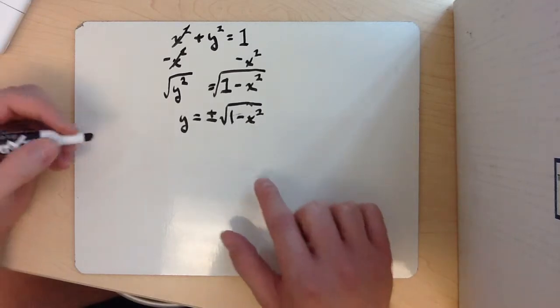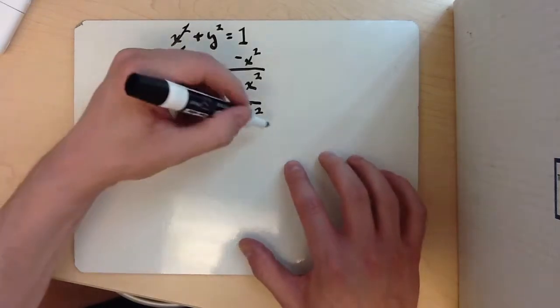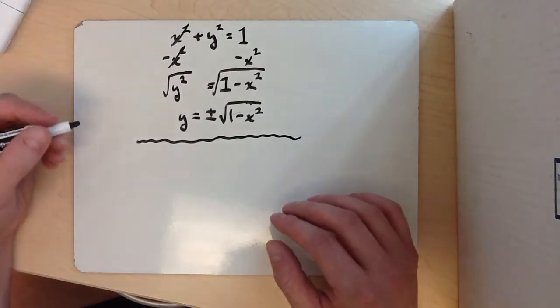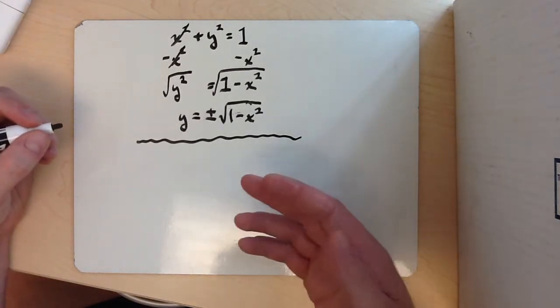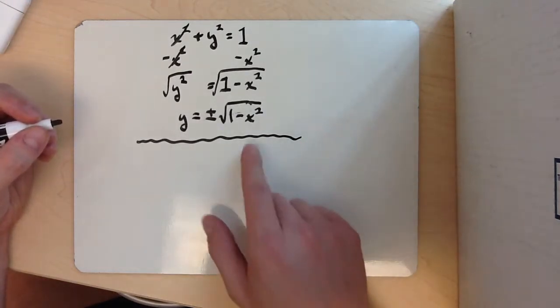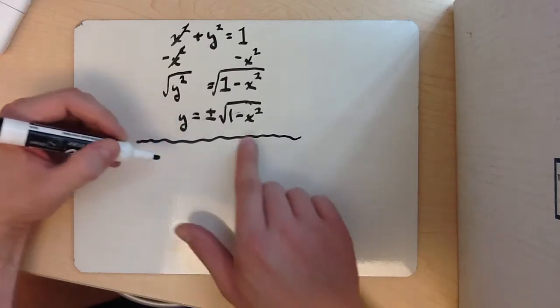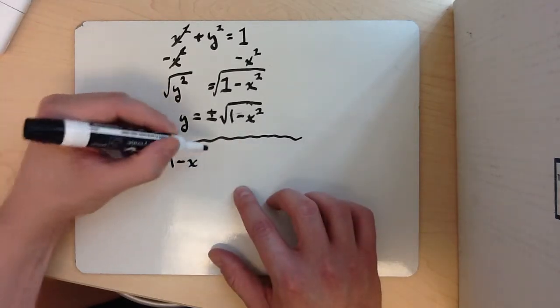So what we're going to do is this 1 minus x squared has to be - it can be equal to 0 or it can be greater than 0, but it can't be less than 0 because it can't be negative. So I'm going to solve for 1 minus x squared being equal to 0.